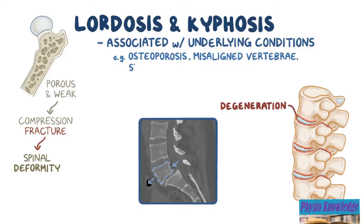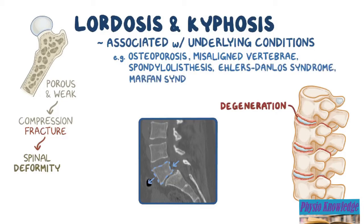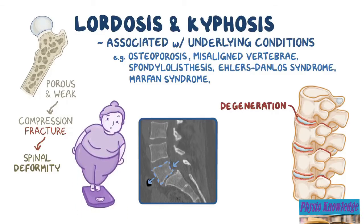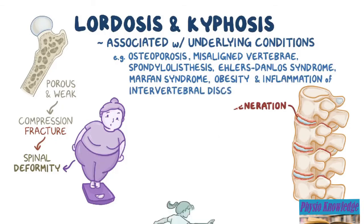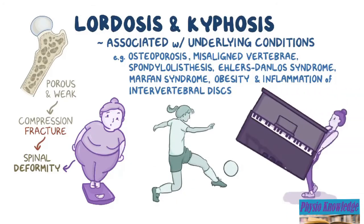Other conditions like spondylolisthesis, in which a vertebra slips out of its normal position, or conditions like Ehlers-Danlos syndrome and Marfan syndrome, where bones and connective tissues overgrow, causing spinal instability. Obesity can also put excess unbalanced weight on the spine, causing it to deform. Other causes include inflammation of the intervertebral discs, which can happen from overuse due to a sports injury, or lifting weights in an inappropriate way.